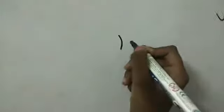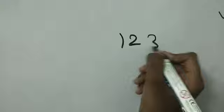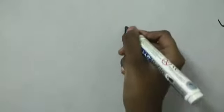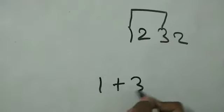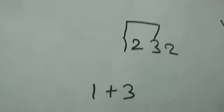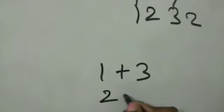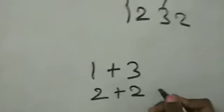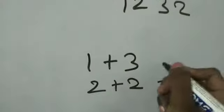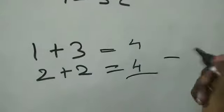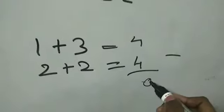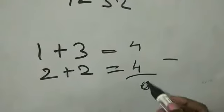If they have given 1232, we should leave 3 and add these three, and we should add this 2. 1 plus 3 equals 4, 2 plus 2 equals 4. We should subtract it: 4 subtracted by 4 equals 0, so it is divisible.